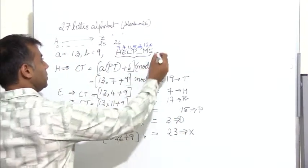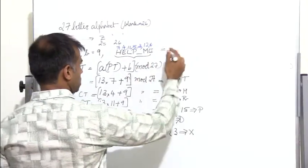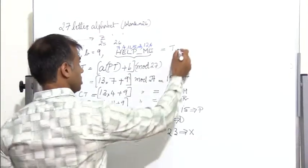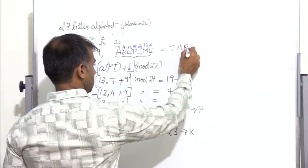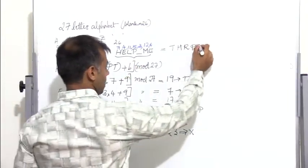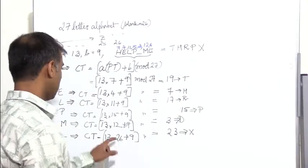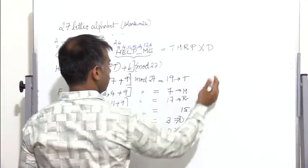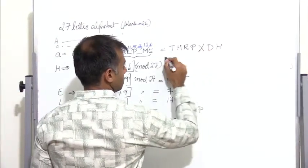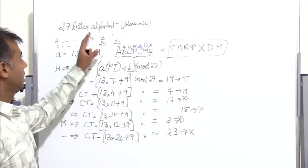So the ciphertext for the plaintext is: h maps to t, e maps to h, l maps to r, p maps to p, blank maps to x, m maps to d, and e maps to h. This is the ciphertext for the plaintext 'help me'.